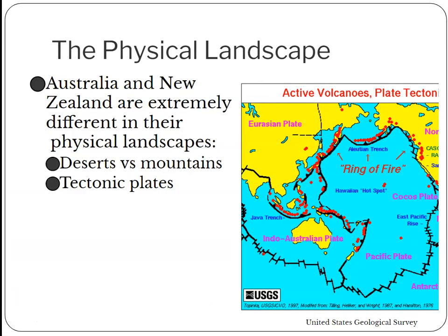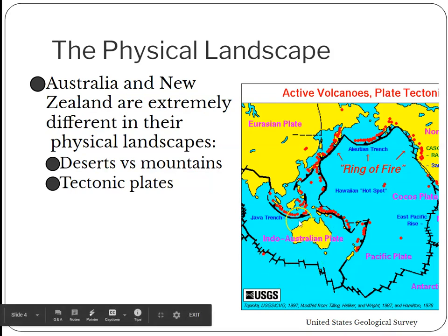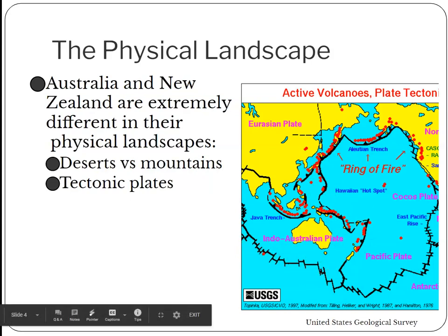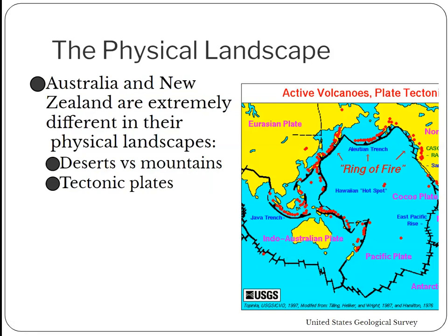Even though there are only two countries in this realm, they are very different from each other in terms of landscapes and climate, largely related to their relationship to tectonic plates. Once upon a time, all continents were together in Pangaea — that was 225 million years ago. Australia is at the center of the Indo-Australian plate, and the plate boundaries don't intersect with the island itself. That means the Australian continent is not experiencing much tectonic activity — volcanoes and earthquakes are extremely rare in Australia. In fact, there may never have been a recorded volcano in Australia.